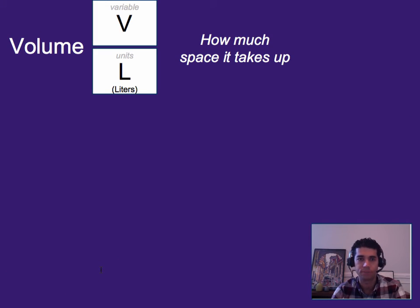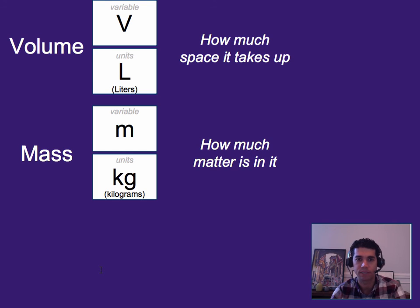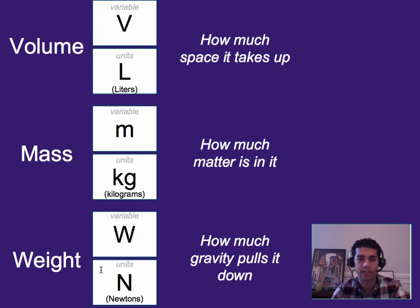So, quick little recap. Volume, how much space something takes up. Mass, how much matter is in it. And weight is how much gravity pulls down on that object. Now, it's important that you always label things as weight, not as gravity, when you're talking about the force. You can also call it force due to gravity or force with like a little G down beneath it. But you do not want to label it as just G since G the variable is 9.8 meters per second squared and is an acceleration, not a force.